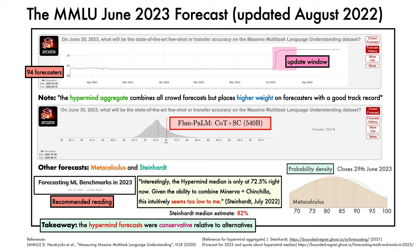A more personal takeaway is that these forecasts seem potentially very useful as a way to gauge whether progress falls within expectations. Credit to Jacob and his team for organising them and putting their forecasts into the public domain. I'd echo their recommendation to contribute to future forecasts, particularly if you're a domain expert.